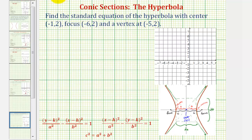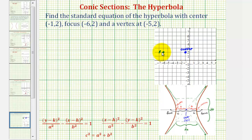Let's start by applying these points on the coordinate plane. The center has coordinates negative one, two. A focus has coordinates negative six, two. Notice how this point is five units to the left of the center, which means the other focus must be five units to the right of the center.